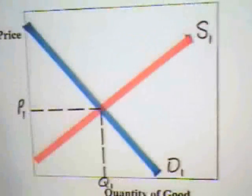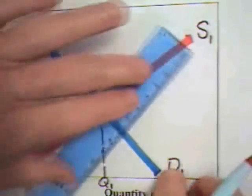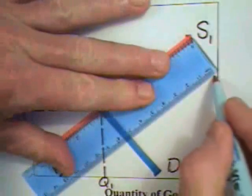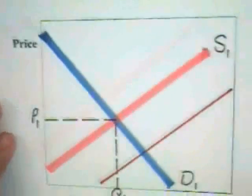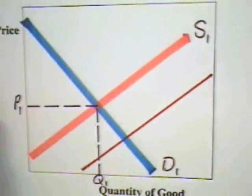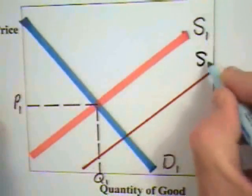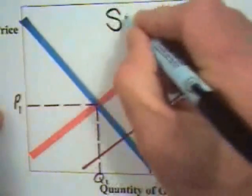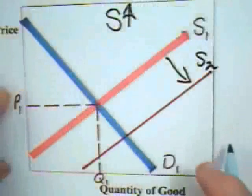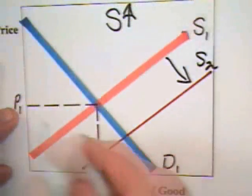Now, we can consider changes in supply. That is, we can consider an increase in supply. Suppose the supply curve goes from S1 to S2. That is, you have an increase in the supply curve.